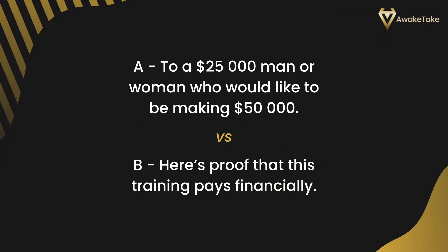Now here are some headline examples — three simple examples with two options each. Pause and try to pick the best one based on what we've covered. Headline one: Option A is 'To a $20,000 man or woman who would like to be making $50,000,' and Option B is 'Here's proof that this training pays financially.' Option A is the winner because it specifically mentions money twice and contains a strong indication of increased earnings — a strong promise of benefit. Option B just uses the word 'financially,' which is not as effective, and Option A is also more specific and clear.